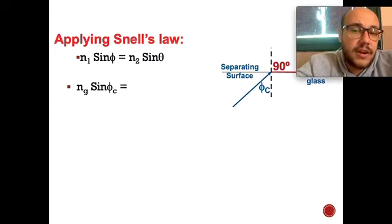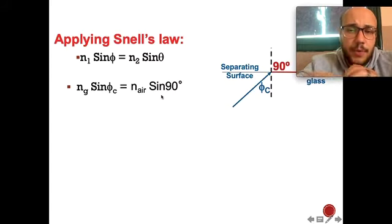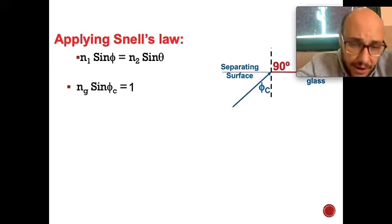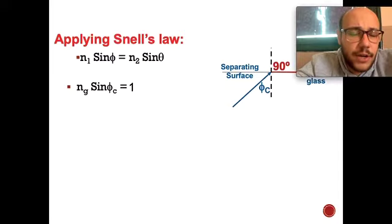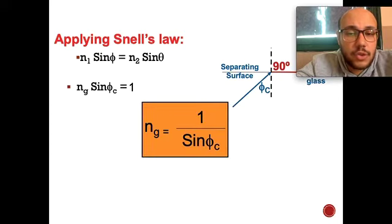At the critical angle: n_glass × sin(φ_c) = n_air × sin(90°). Since n_air = 1 and sin(90°) = 1, we get n_glass × sin(φ_c) = 1. Therefore, for any medium: n = 1/sin(φ_c).